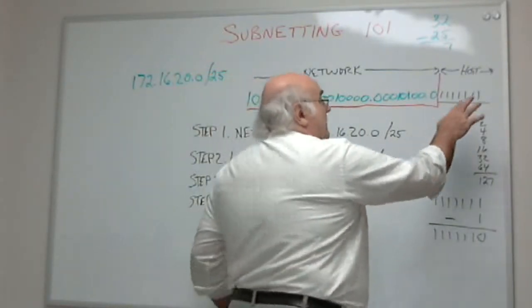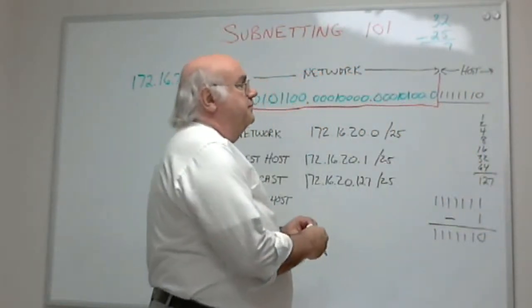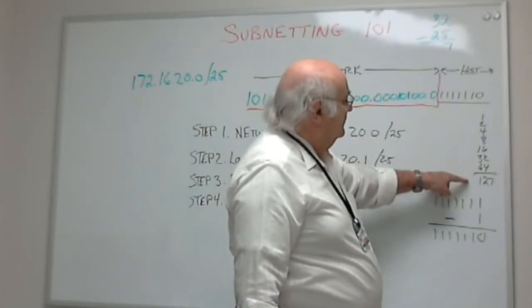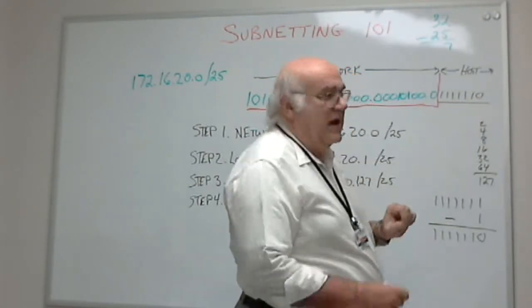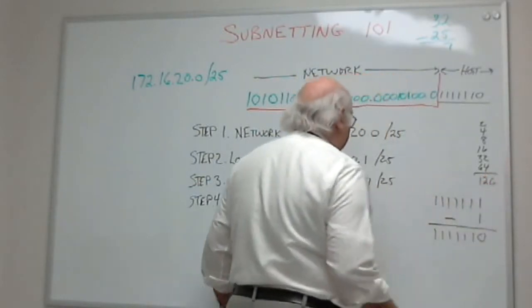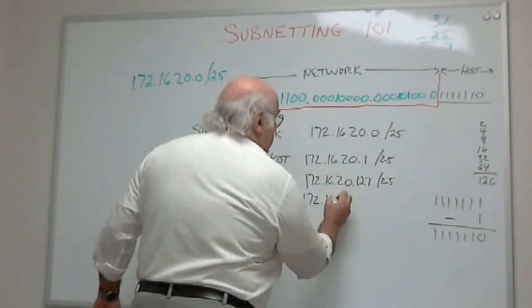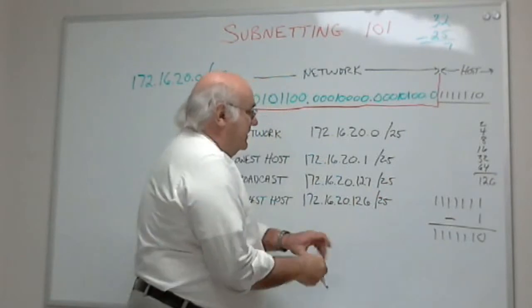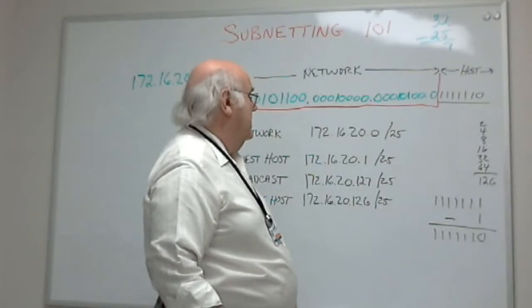All you have to do is change the last bit back to 0. Now what do I have? Well, I have this same string. I am going to add them all up, except I am going to take that one off, because I don't have a 1 there, I have a 0. So now that gives me 126. So my highest host is 172.16.20.126. And notice I haven't moved the fence at all. I am still slash 25.